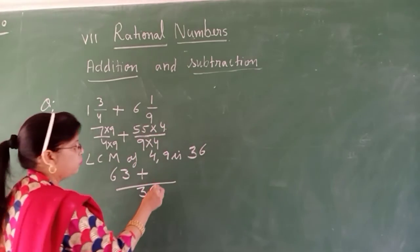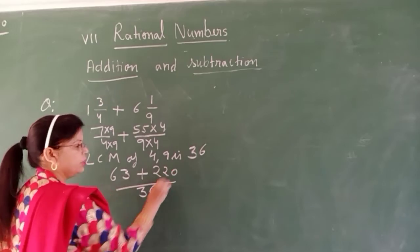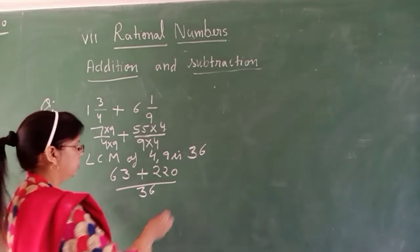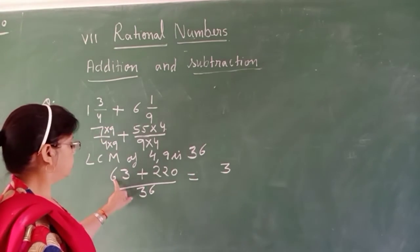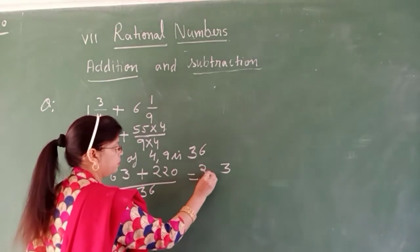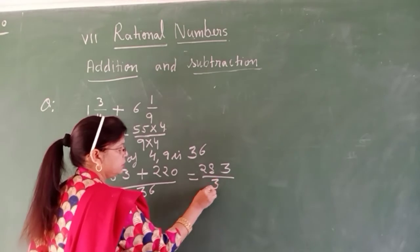55 multiply by 4. You have 220. Now minus? Sorry, plus. 63 plus 220. After you add, you get 283 over 36.